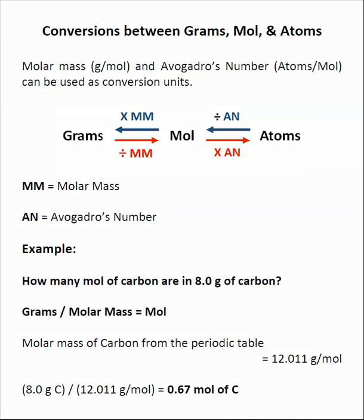Easily one of the most important calculations that you're going to learn in the first semester of general chemistry is being able to convert between grams, moles, and number of atoms. And to be able to do this, we need two things. We need the molar mass of whatever we're dealing with, and also we need Avogadro's number.